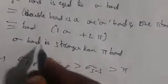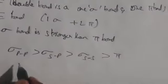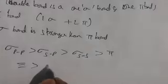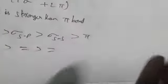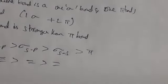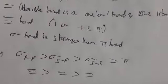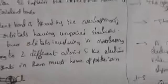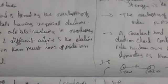In terms of strength order: triple bond is stronger than double bond, which is stronger than single bond. These are the general characteristics of the covalent bond. In the next class we will discuss the directional properties of covalent bonds and properties of covalent bonds. This concludes Valence Bond Theory — thank you.